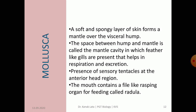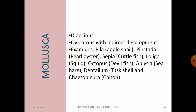A soft and spongy layer of skin forms a mantle over the visceral hump, and the space between the hump and mantle is called the mantle cavity, in which feather-like gills are present. These feather-like gills help in excretion as well as respiration. At the anterior head region, sensory tentacles are present. The mouth contains a file-like rasping organ for feeding called the radula, which has transverse rows of teeth. Sexes are usually separate, that is dioecious. Fertilization may be external or internal, and asexual reproduction is lacking.